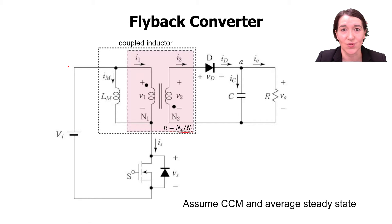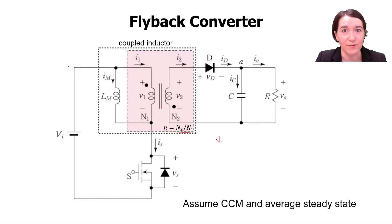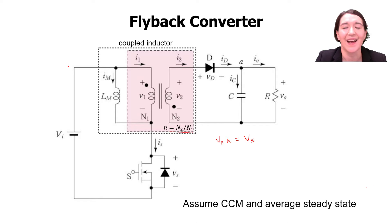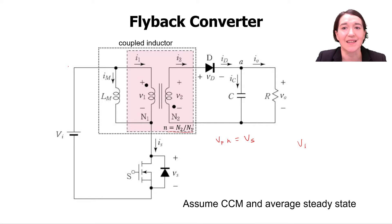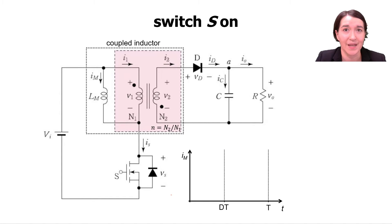For the coupled inductor there is a turns ratio of n, which is defined as n2 — the secondary side turns — divided by n1 — the primary side turns. Remember that the primary voltage times n is equal to the secondary side voltage, or equivalently, the primary side voltage equals the secondary side voltage divided by n, the turns ratio.